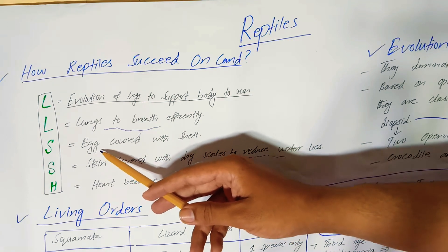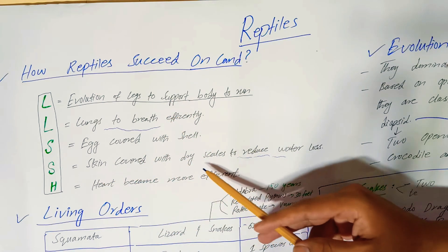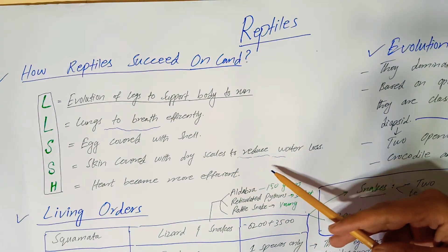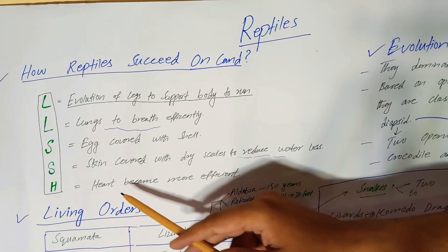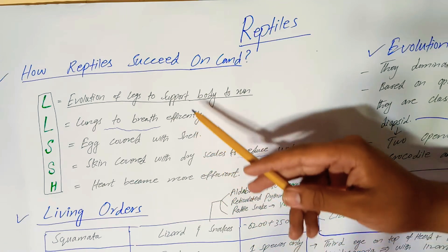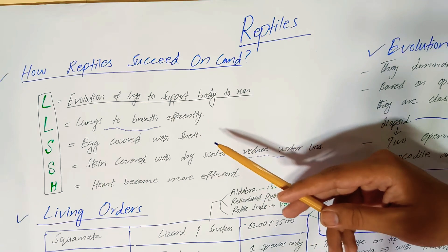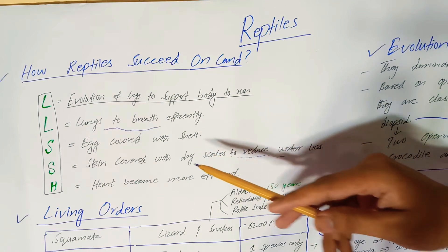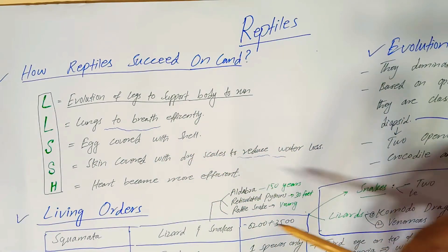Additionally, the skin of reptiles is covered with dry scales, which are made of protein. These scales reduced water loss from the body to a minimum. Furthermore, the heart became more efficient compared to amphibians and fishes, which improved their survival on land. These five characters are summarized in a LUSH acronym I have created so you can easily remember them.